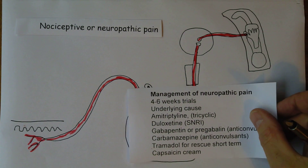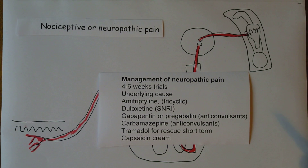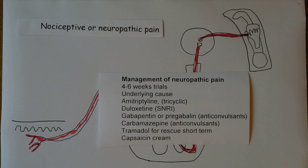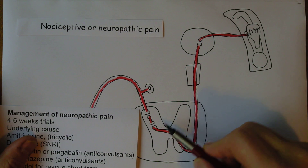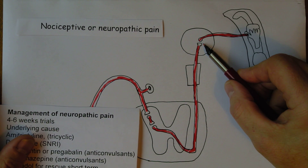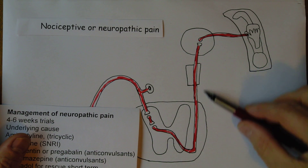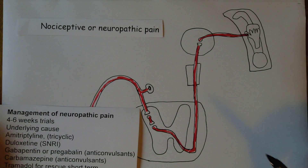Neuropathic pain can take a while to treat — it can take a few weeks to get the pain under control. If possible, treat the underlying cause. We might give amitriptyline, which is a tricyclic, or duloxetine, which is a serotonin-noradrenaline reuptake inhibitor. These increase the amount of norepinephrine and serotonin in the synapses — perhaps more in the analgesic pathways that are inhibiting the pain rather than in the primary pain pathway.